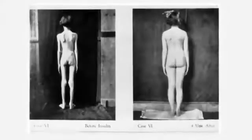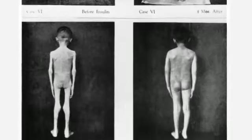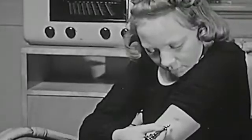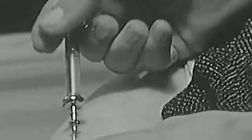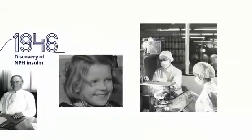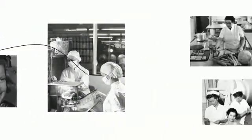Until this point diabetes had been a death sentence, but with insulin the average life expectancy of a person diagnosed with diabetes improved dramatically. As we began to understand more about diabetes, it became clear that there are several types.